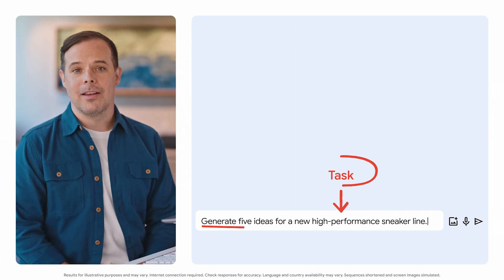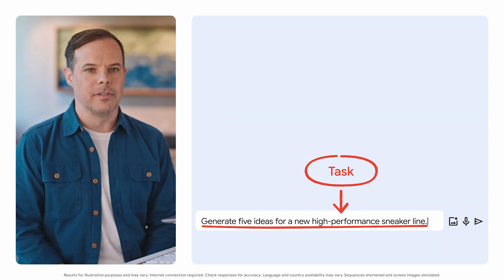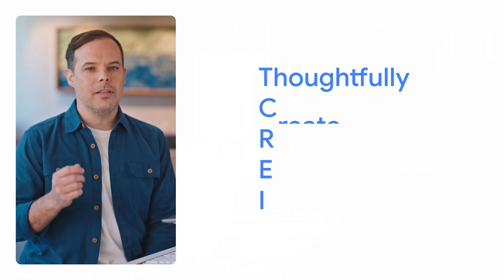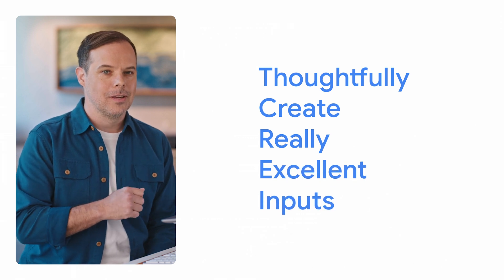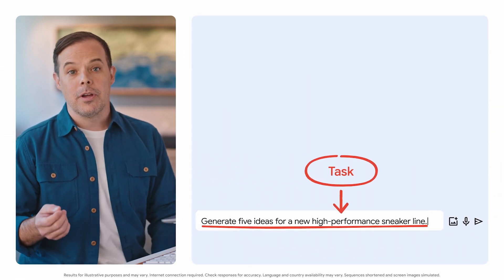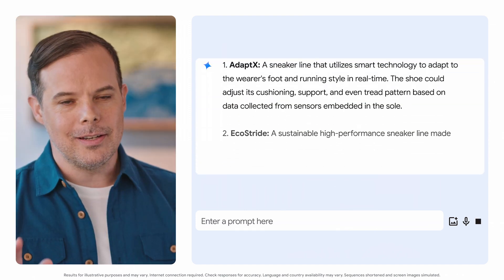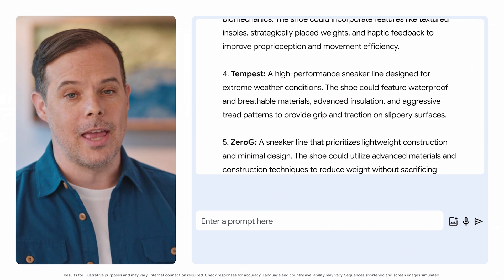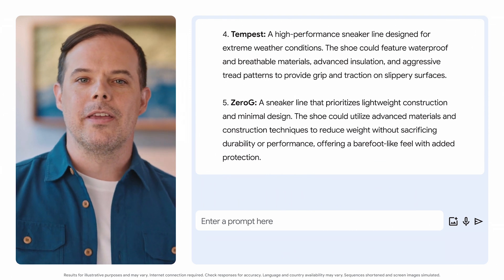We've asked Gemini to complete a task, but we're not really applying the prompting framework yet. Remember, thoughtfully create really excellent inputs. This prompt is all task and nothing else, which might give us an output that's too broad and not very useful. Still, Gemini generated five ideas with unique names and descriptions. This isn't a bad start, but we can do better.